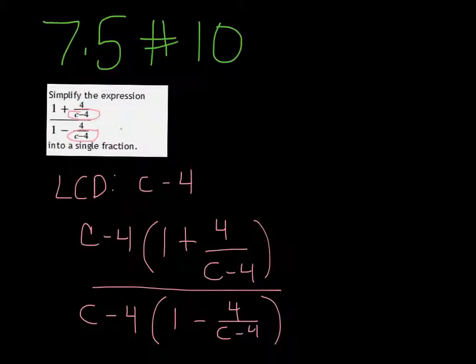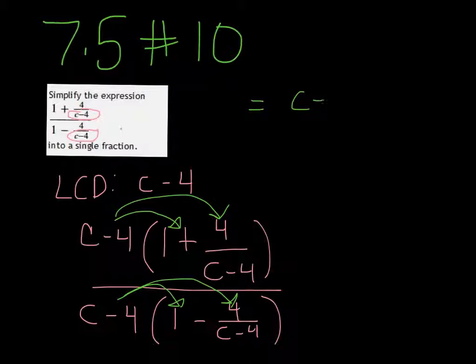You're going to distribute that c minus 4 to both terms inside the parentheses. When we do that, we get c minus 4 plus 4, because the c minus 4s here and here are going to divide out.